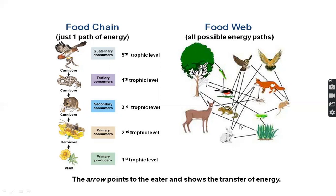A food web, on the other hand, involves multiple pathways. For example, a wave (rabbit) can be eaten by a fox as well. This illustrates how the food web discusses all possible energy pathways. The main difference between food chain and food web is that many food chains combine to form a food web, but a food chain alone is not a food web.